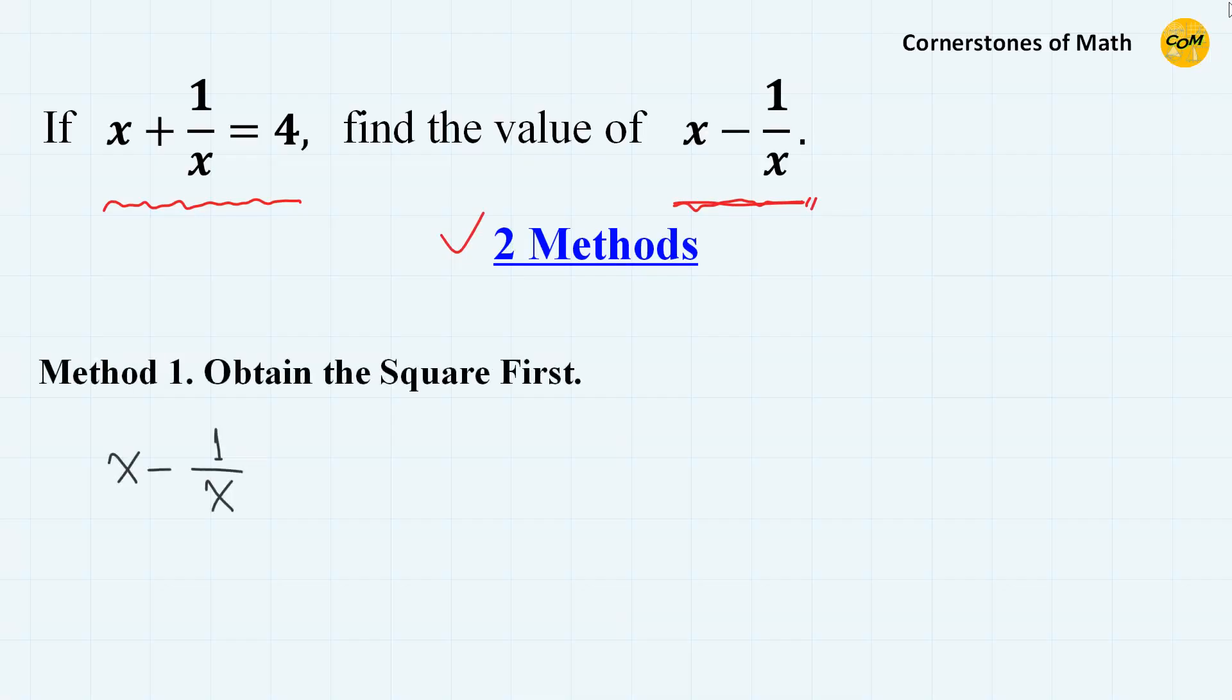I will show you the quickest and the simplest method first. The tip is, if the sign is reversed like this, it is helpful if we try to obtain its square first. This gives x squared plus 1 over x squared, then minus 2.